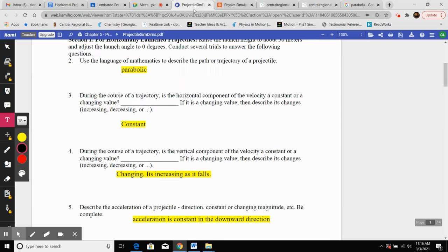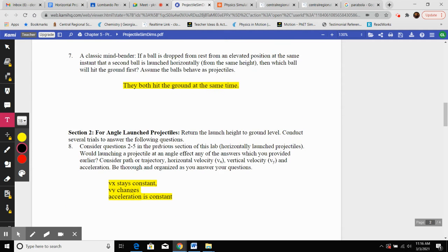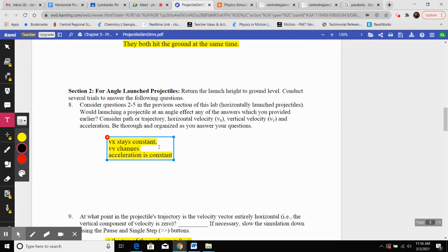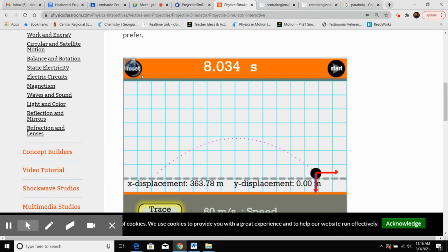So no, none of these things changed. It's still a parabolic path. The x velocity is still constant. The y velocity still changes, and the acceleration is still constant. So if I just had to show the acceleration vector, that doesn't change at all either. It's downward.